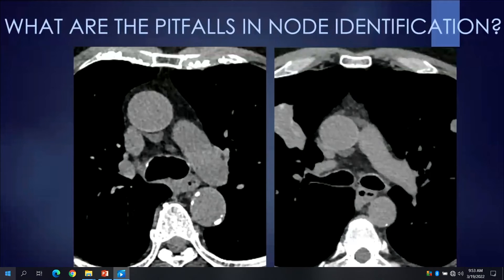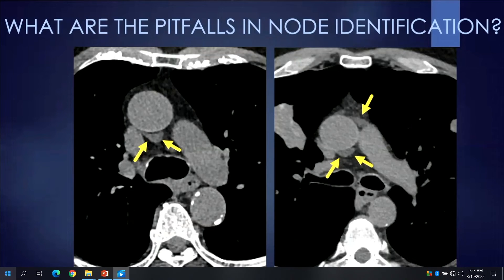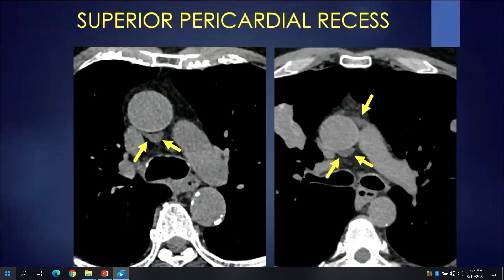Are there pitfalls we should be aware of in our nodal identification search pattern? Here's a case in which we see well-circumscribed crescent-shaped areas of low attenuation posterior to the ascending aorta at the level of the left pulmonary artery. If you look carefully at the image to your right, you'll appreciate a similar-appearing structure in the anterior mediastinum between the ascending aorta and the main pulmonary artery. This structure actually represents normal anatomy — the superior pericardial recess — which can be mistaken for an intrapulmonary lymph node.